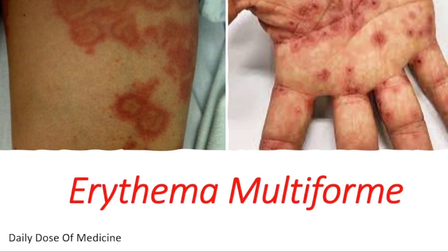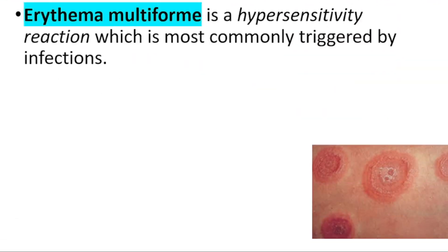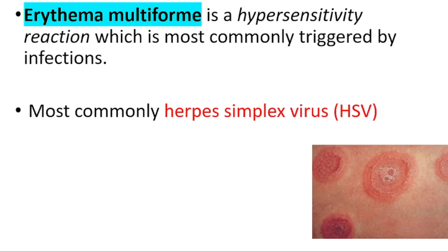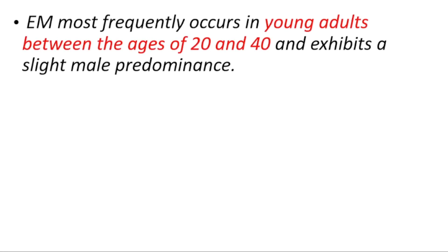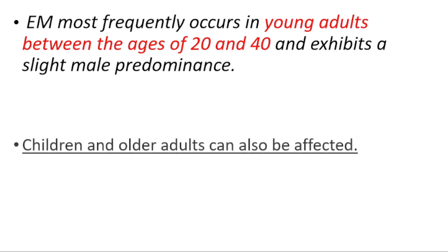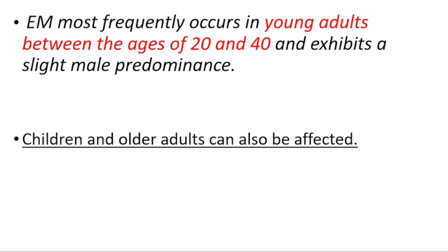In this presentation we're getting into erythema multiforme. It's a hypersensitivity reaction commonly triggered by infections — the most common being herpes simplex virus. It's generally seen in young adults between the ages of 20 and 40 with a slight male predominance, although it can also occur in children and older adults.